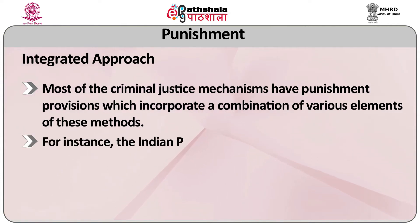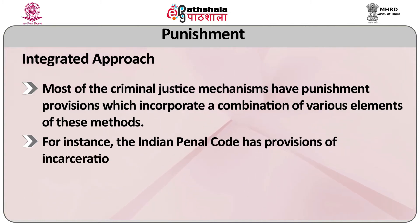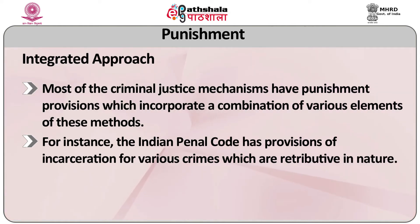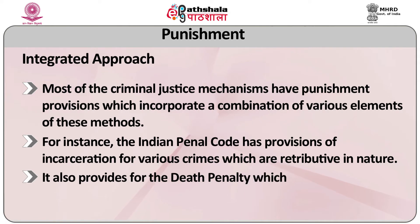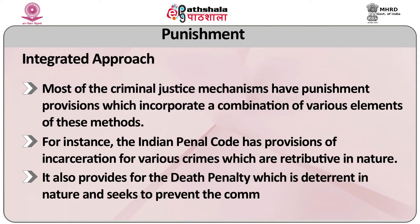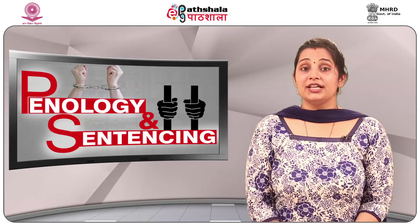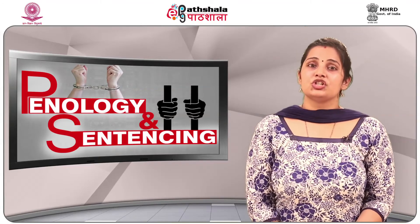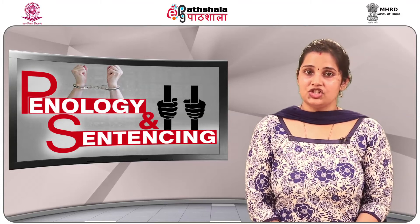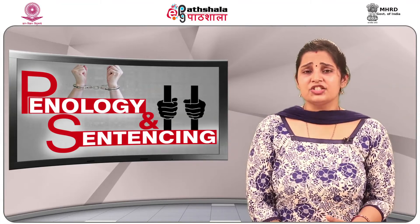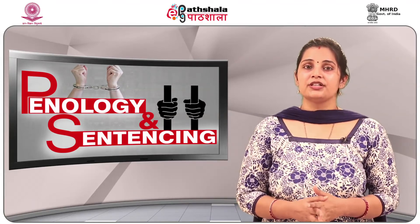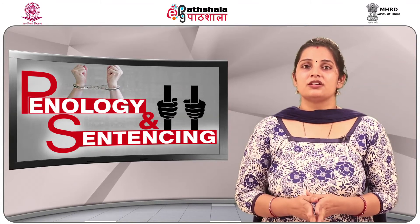Based on the above theories of punishment, penal laws all over the world are of various types. Most criminal justice mechanisms have punishment provisions which incorporate a combination of various elements. For instance, the Indian Penal Code has provisions of incarceration for various crimes which are retributive in nature. It also provides for the death penalty, which is deterrent in nature. For dealing with young offenders, the legal system provides for the Juvenile Justice Act, which by nature is reformative. It will be worthwhile to look at the types of punishment found in criminal justice systems around the world.